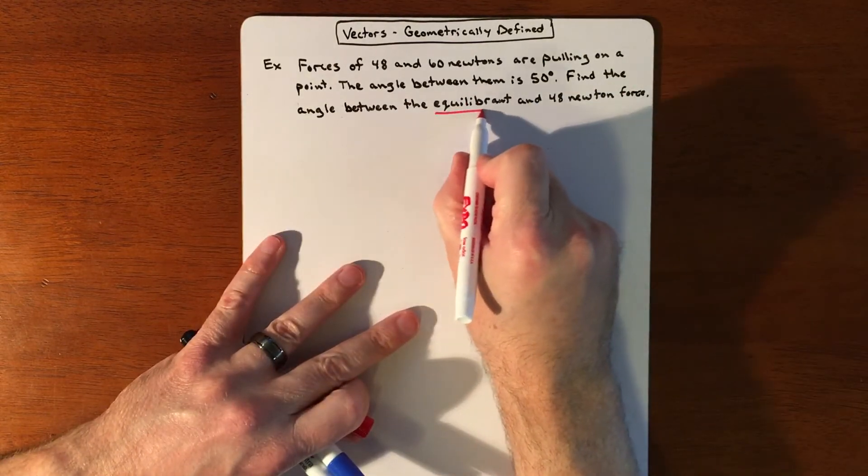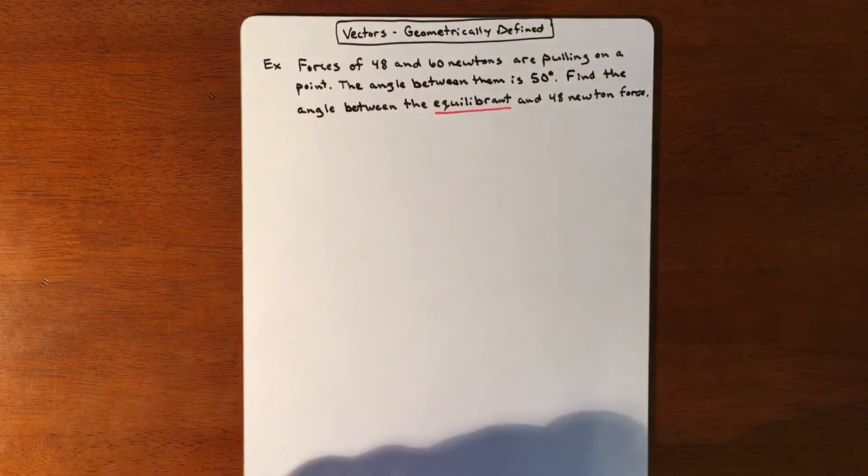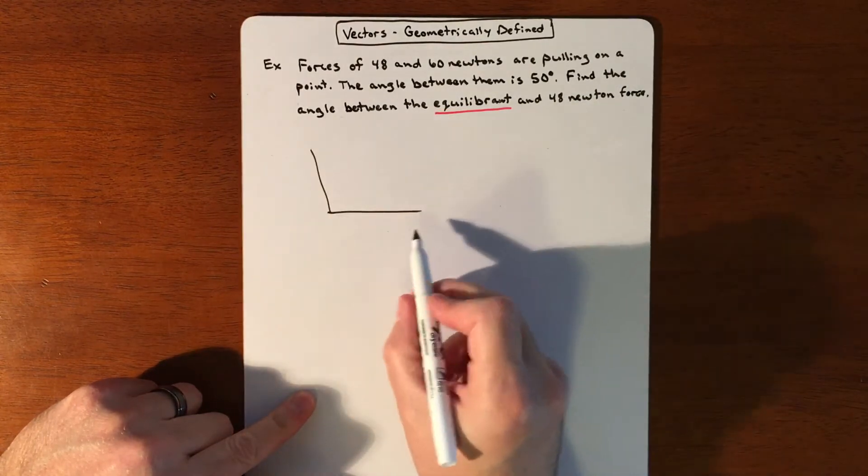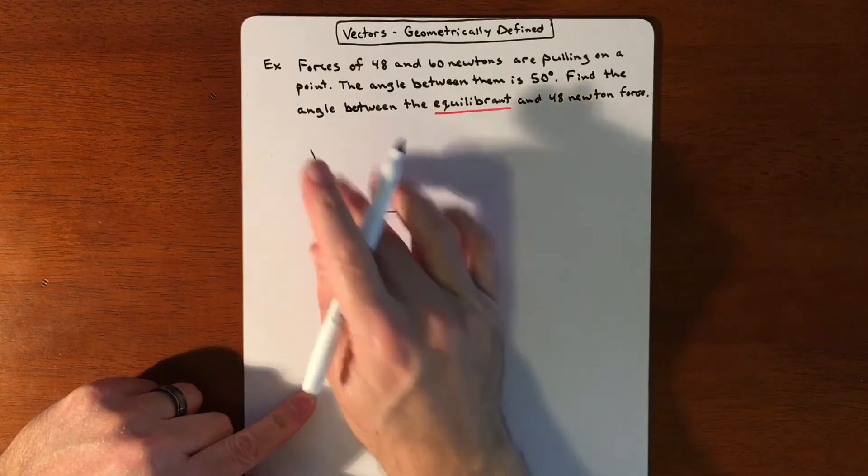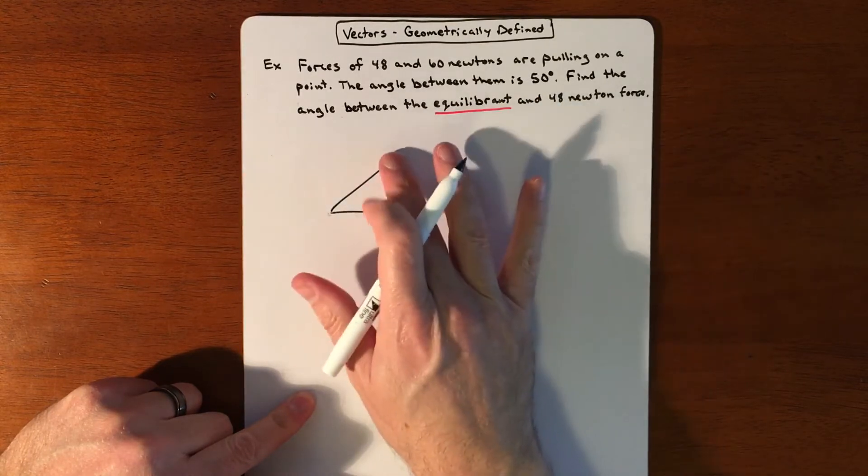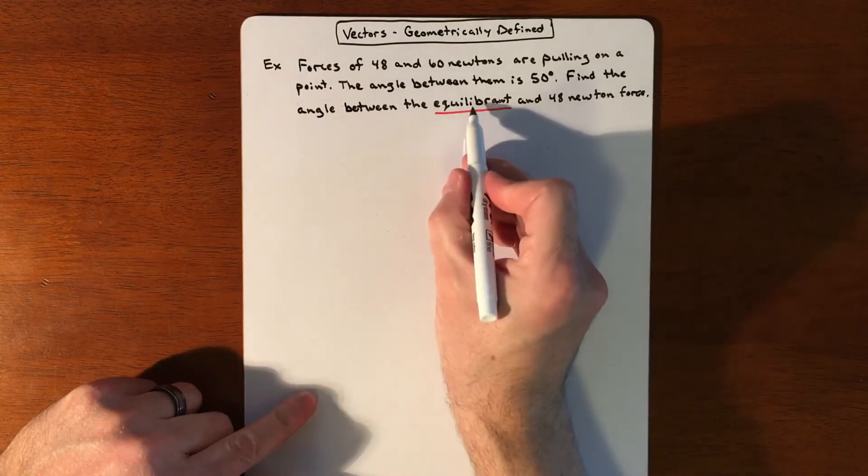This is what makes me draw my picture a little bit different. So in a prior example we kind of drew something like this, and we have a force pulling this direction, force pulling this direction. Now we would have a 50 degree angle. But I'm going to show a little bit different because of that.